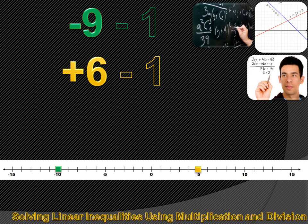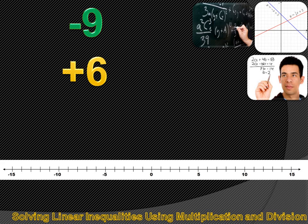Moving the numbers to the correct position on the number line, you see it's true — minus 10 is in fact smaller than positive 5. What if we multiply both sides by minus 1? The rule is that if we multiply or divide both sides of an inequality by a negative number, the inequality sign has to reverse.